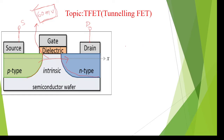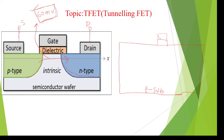If you take a normal FET, it requires more than 60 millivolts. Here you can see the normal MOSFET fabrication process. We take a P-substrate or N-substrate, deposit a gate terminal (polysilicon) in the middle, and then design the source and drain terminals.